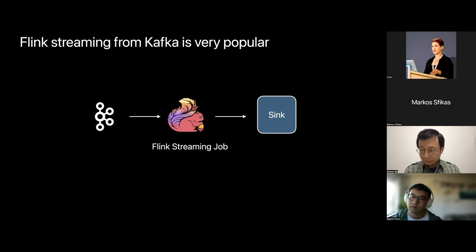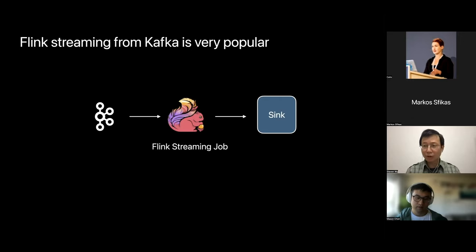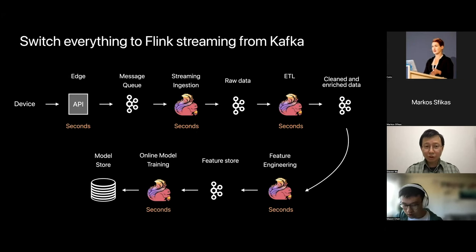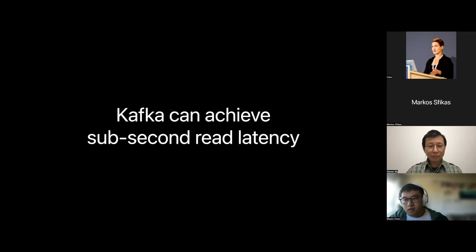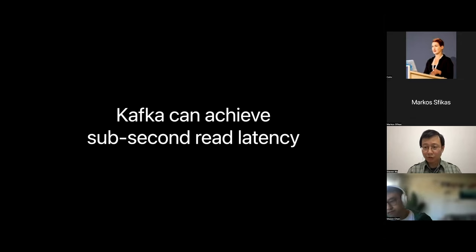For many machine learning use cases, latency matters. The industry has been shifting toward online learning and online prediction. So how can we reduce the latency of this pipeline? We know Kafka is probably the most popular streaming data storage, and Flink is one of the most popular stream processing engines. So we can have Flink streaming data from Kafka — this is a very popular pattern. So why don't we switch everything to Flink streaming from Kafka? It's definitely a viable solution, and I'm sure many people are doing it that way.